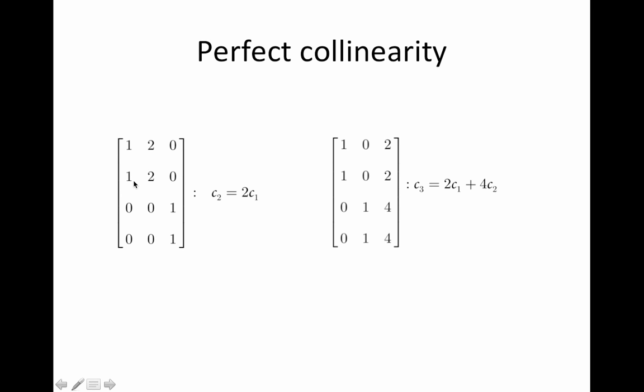Here's a case where you have to do a linear combination. Two times the first regressor plus four times the second regressor gives us the third regressor. These are both cases of perfect collinearity.